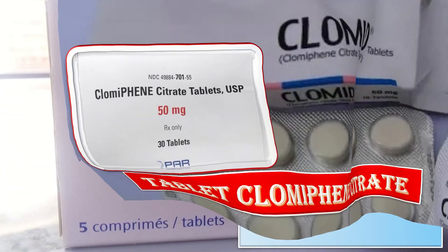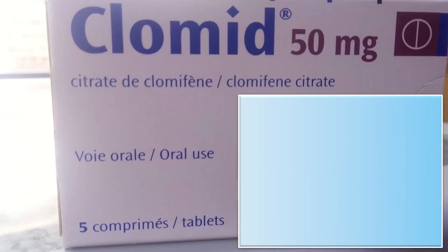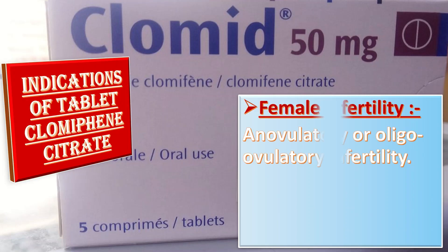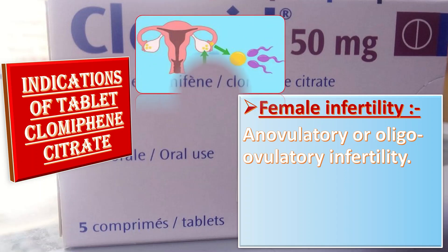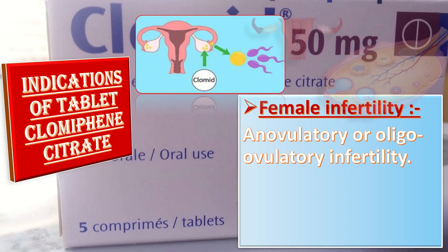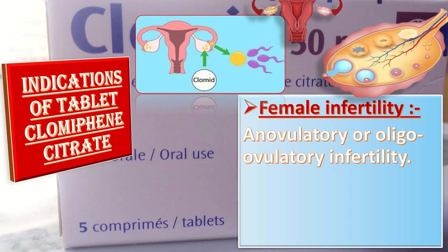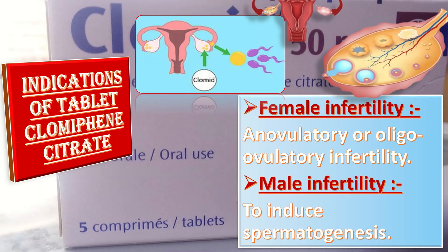What are the indications of tablet clomiphene citrate? In females, clomiphene citrate is commonly indicated to treat patients diagnosed with anovulatory or oligo-ovulatory infertility, to induce ovulation for patients wishing to conceive. It is also indicated for the treatment of male infertility to induce spermatogenesis.